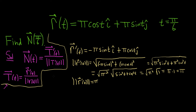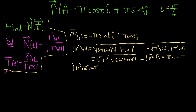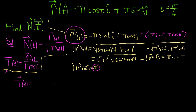Now we can form the unit tangent vector T(t). In component form, we divide r prime of t by π, so each component is divided by π. This gives us negative sine(t) and cosine(t) — that's the unit tangent vector.